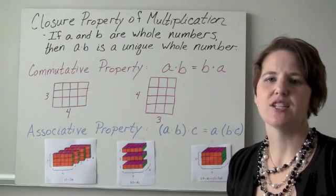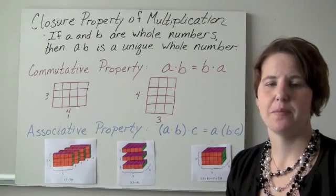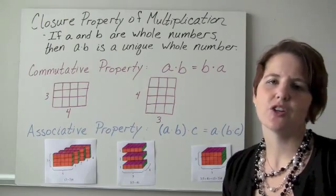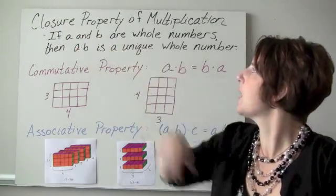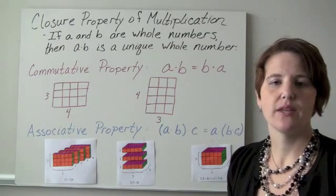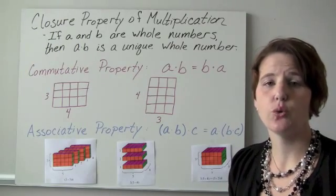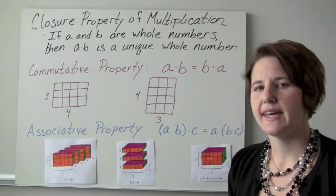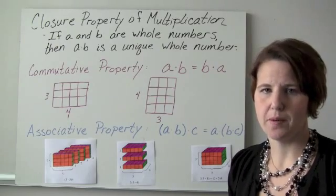In this lesson we're going to talk about some properties of multiplication. The first property is the closure property, which says that when you take the product of any two whole numbers, you're going to get a unique whole number.